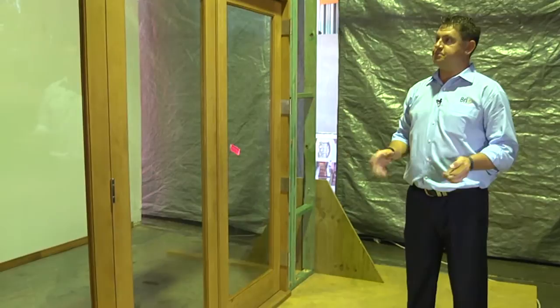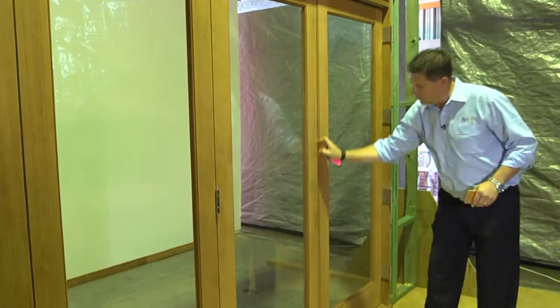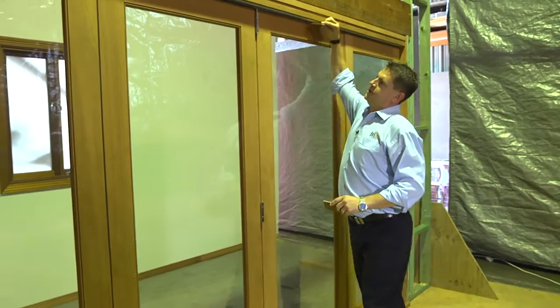Now that everything's all been adjusted, we just need to do a final check of all our gaps to make sure we have a perfect consistent gap all the way between the rebate of the two doors.